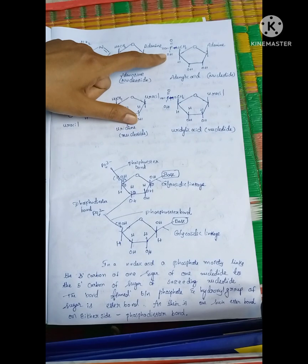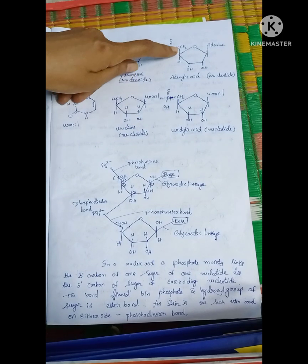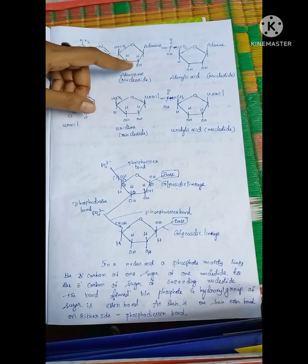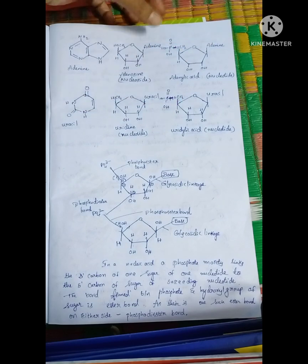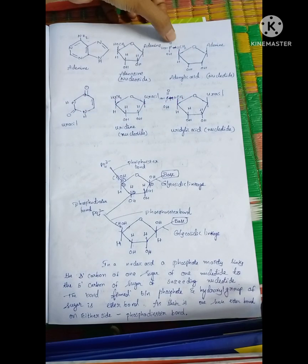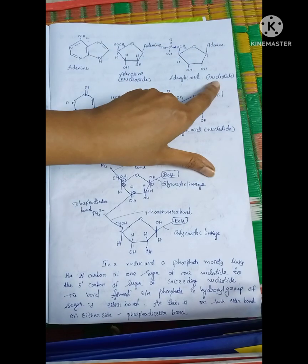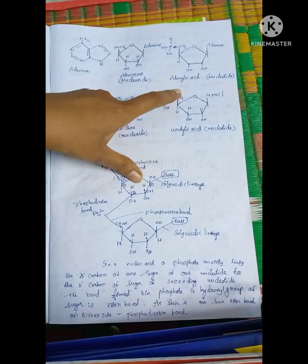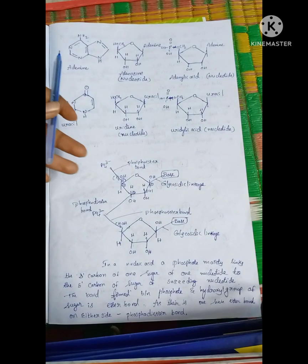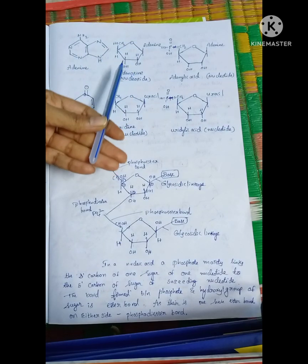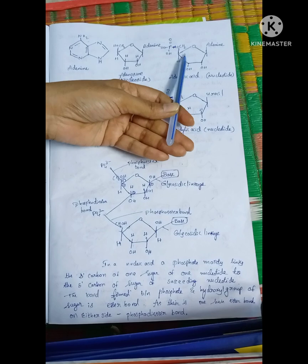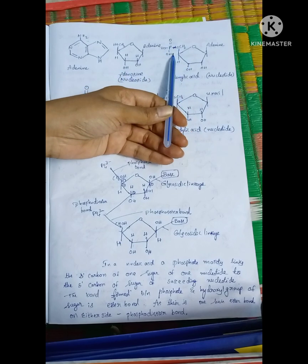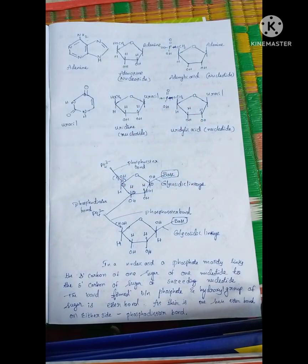A phosphate group is then added at the 5th carbon place of the sugar. This gives a nucleotide. So: adenine is the base, adenine attached to sugar forms the nucleoside adenosine, and adenosine attached to the phosphate group forms the nucleotide adenylic acid.